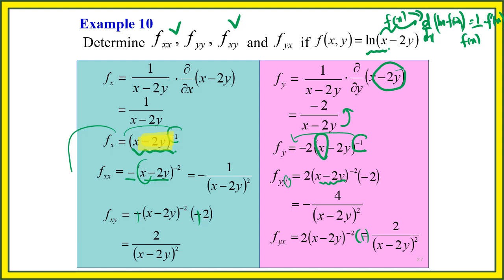That's all for the first order and second order partial differentiation. It's a bit tricky but really simple — just assume all variables other than the one you are differentiating with respect to are constants. Please look at the tutorial questions and try them on your own. We will discuss tutorials 1 and 2 together on Tuesday. Please follow the schedule as we have replacement classes on 5 Saturdays. Thank you, class.